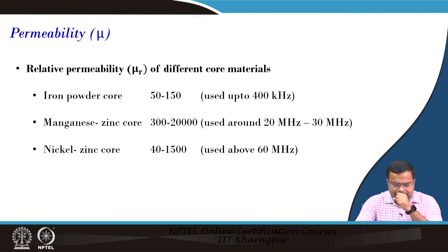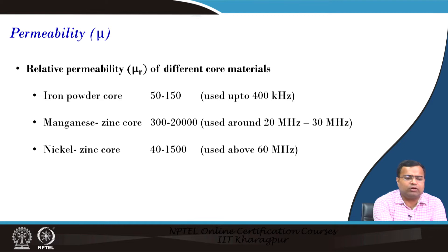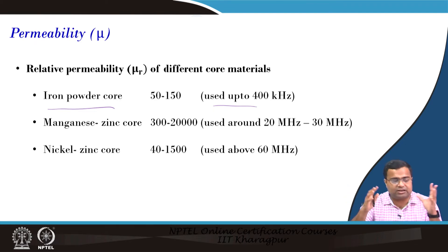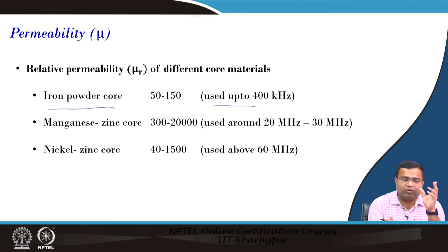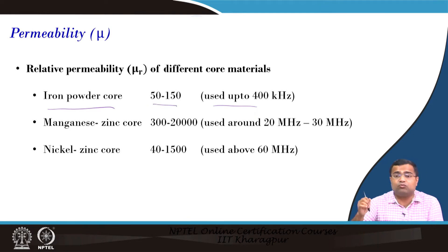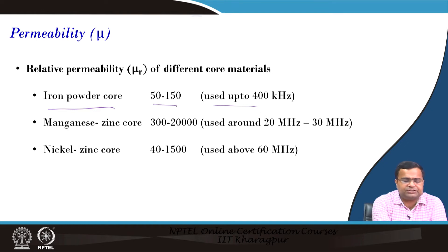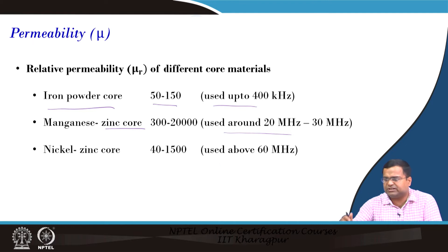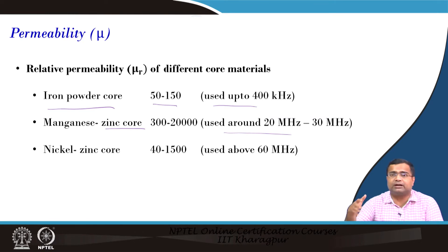Regarding relative permeability, the core can be iron powder core, which is typically used for low frequency up to 400 kilohertz. Even for traditional ferrite core, we use iron powder core where relative permeability is in the order of 50 to 150 and we can effectively operate at 100 kilohertz or a few hundred kilohertz. If you use a nickel-zinc core, we can go for even much higher switching frequency. We have to be very careful about the core material in order to operate the converter at a higher switching frequency.